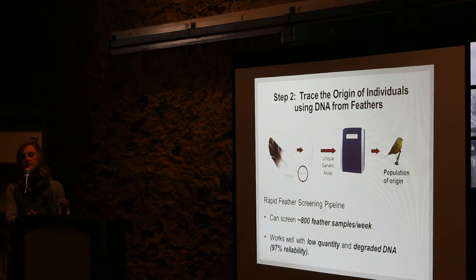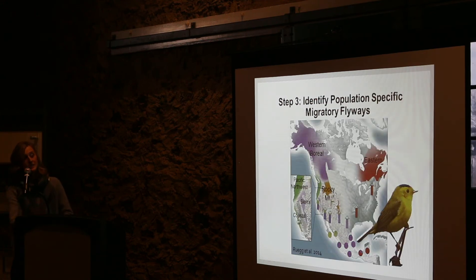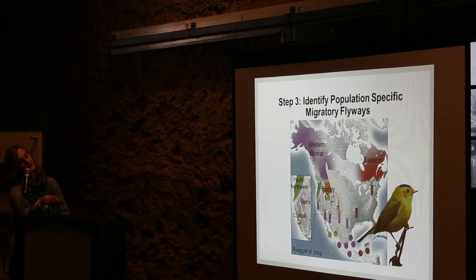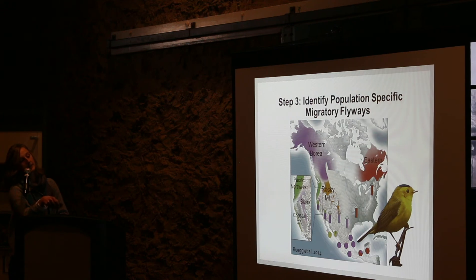Some advantages of this technique are that these assays, once developed, are relatively inexpensive and fast. We've been doing this with other taxa for a really long time — we do this with migratory salmon to assist managers in moving salmon up rivers past certain dams. Once you have these assays, you can sample individuals at all parts of the annual cycle and map those individuals back to where they came from, which is a really powerful tool. We get nice proportions of which populations are being monitored at migration stop-over sites, and the same goes for the wintering area.